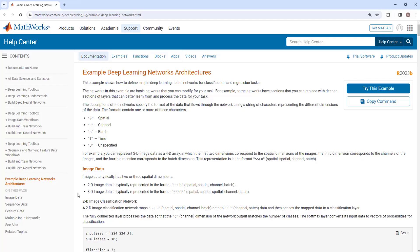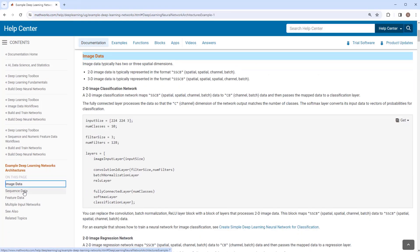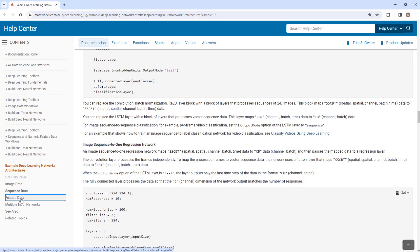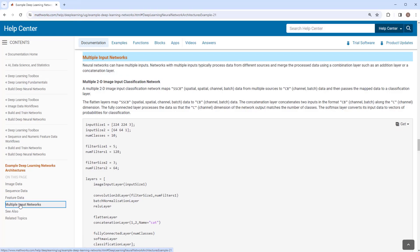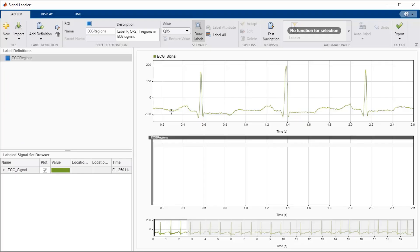Deep Learning Toolbox lets you design and train network architectures like CNNs, LSTMs, GANs, and Transformers. To train your networks, you can automatically label, process, and augment image, video, and signal data.